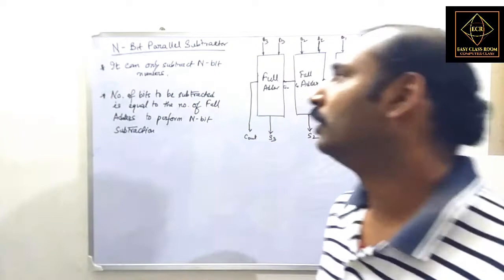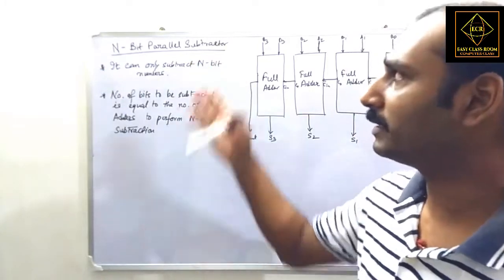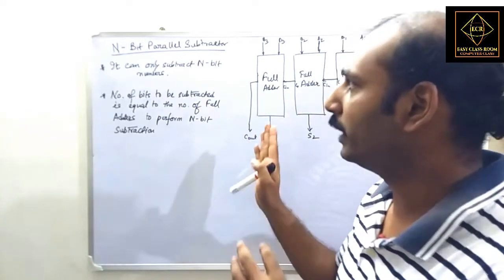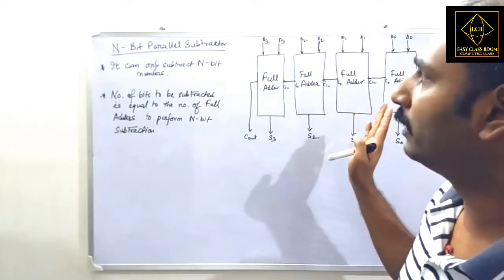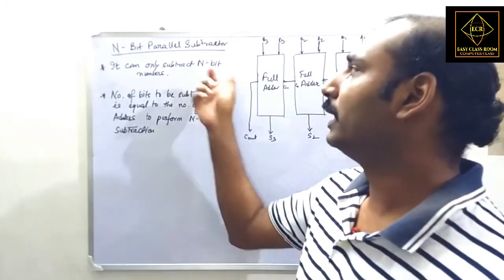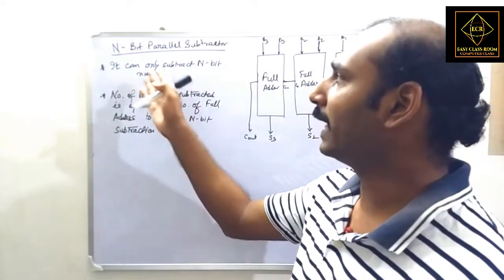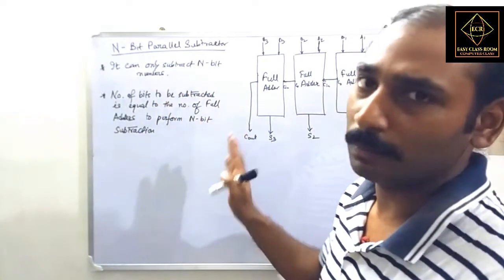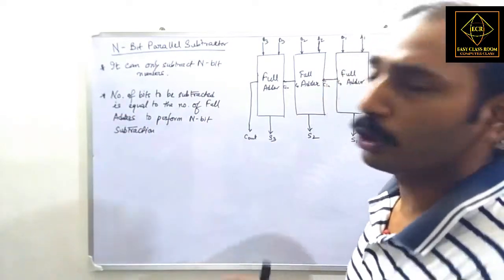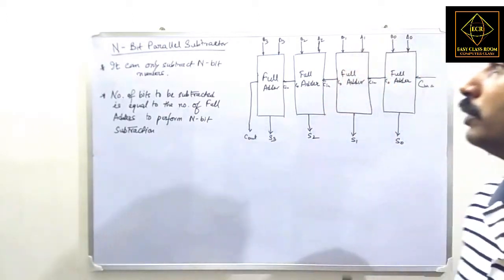It can only subtract N-bit numbers, as the name suggests. Just as N-bit parallel adders can only add N-bit numbers, the parallel subtractor can only subtract these numbers and cannot do anything else. The number of bits that are going to be subtracted is equal to the number of full adders we are going to use.